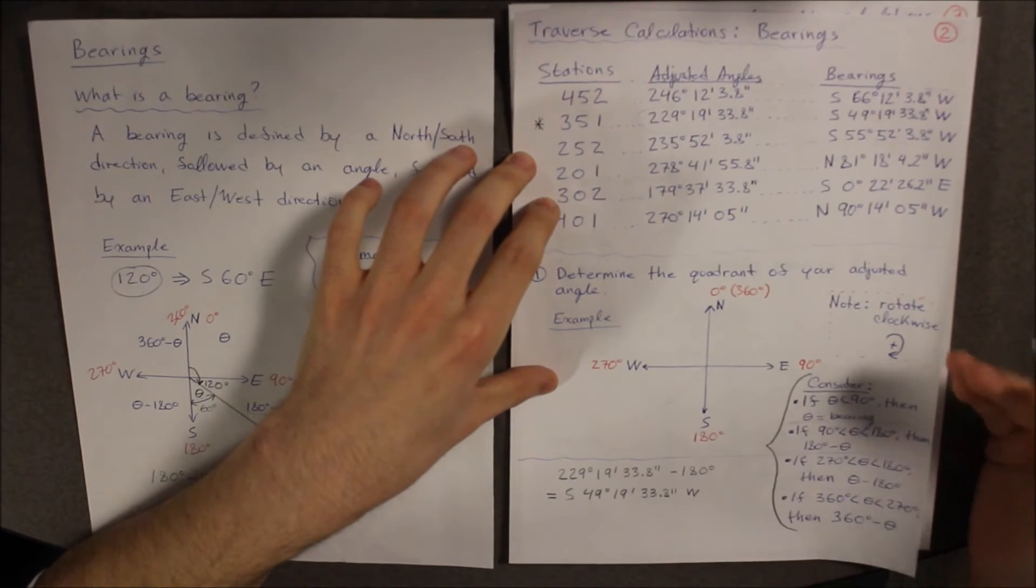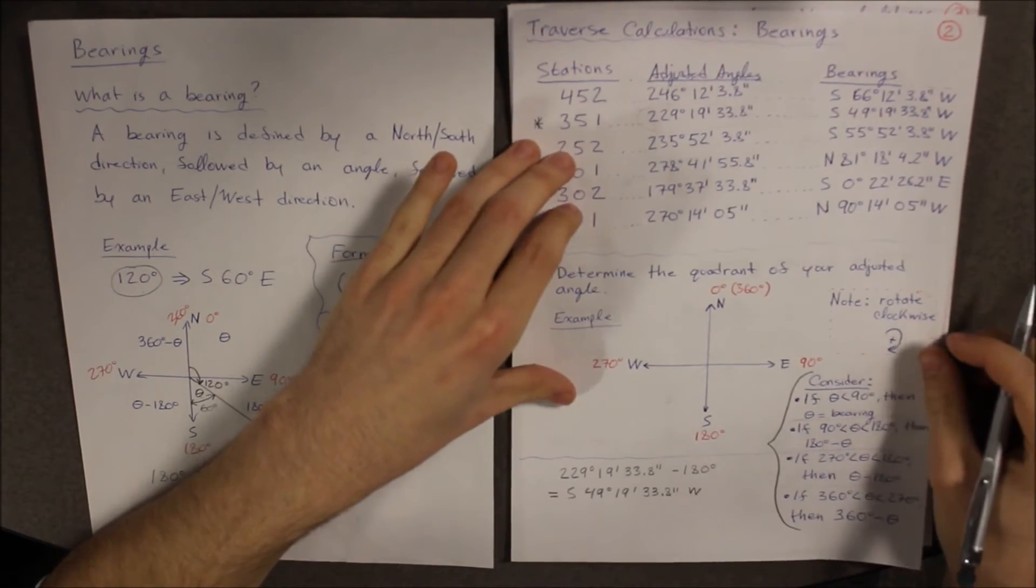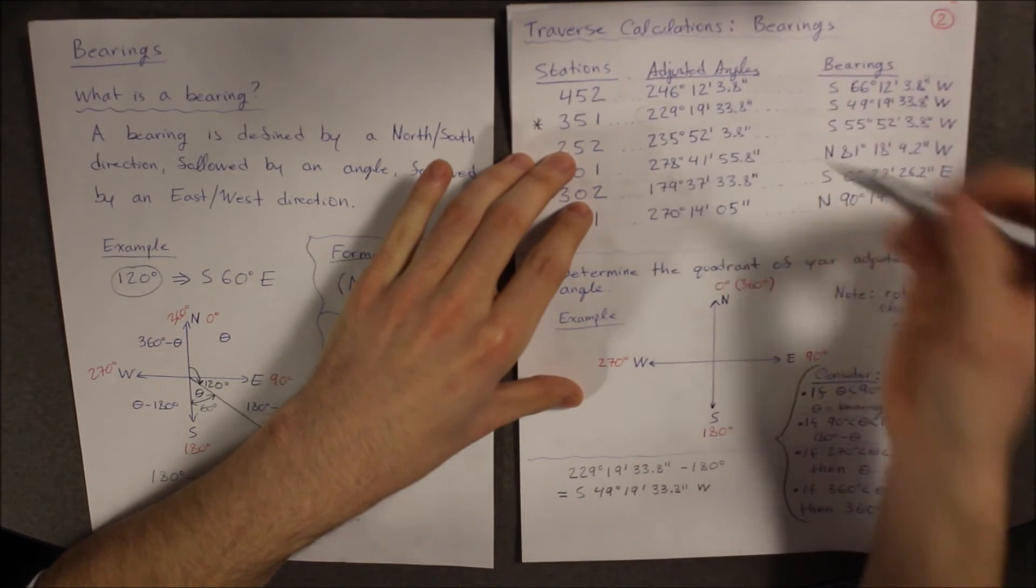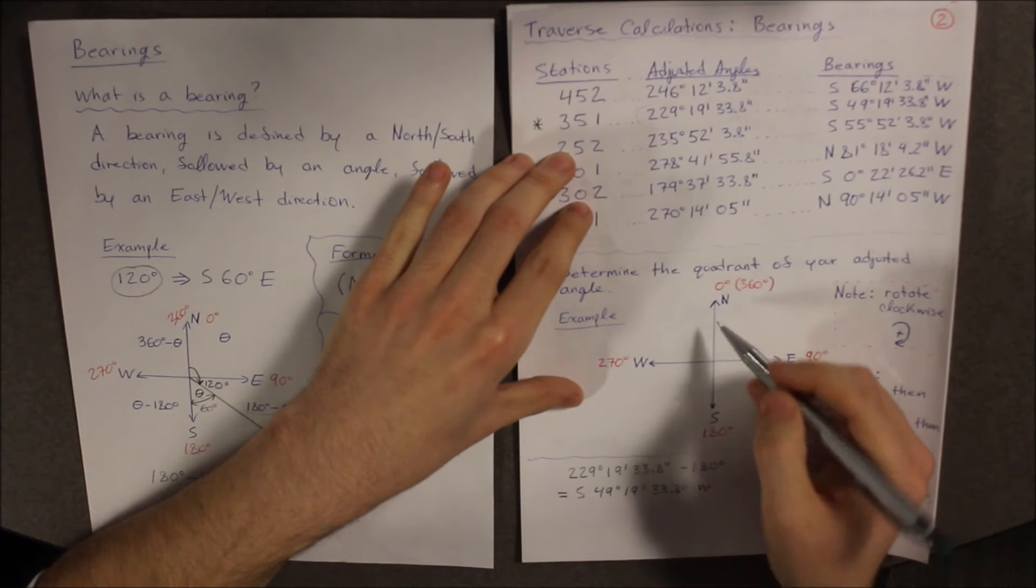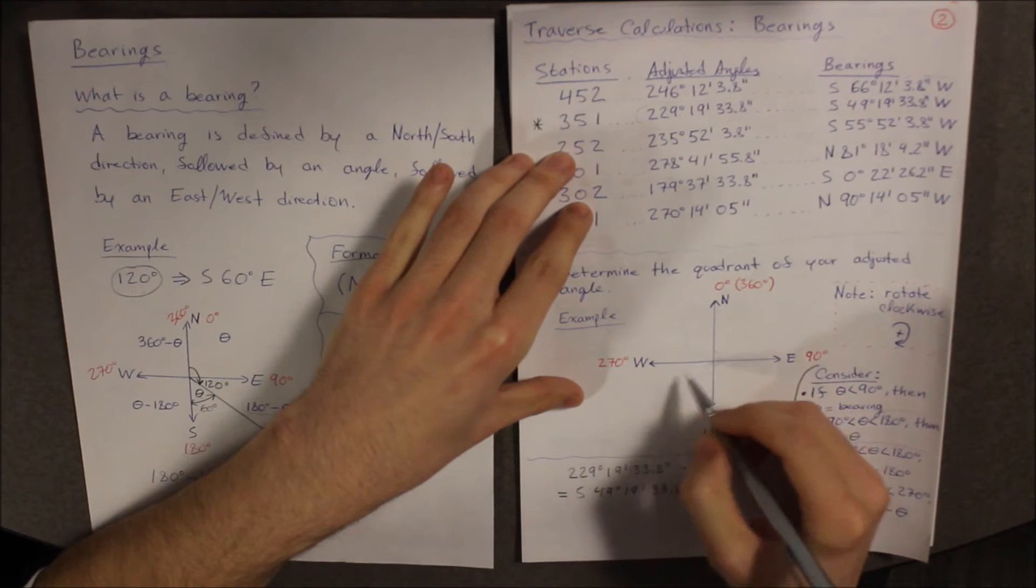Now, first again, you must consider the quadrant that your angle is in, because that will affect which condition you will have to use. So let's start. Let's say 229 degrees, going from north, clockwise, of course.